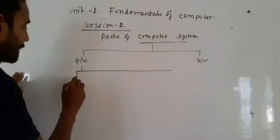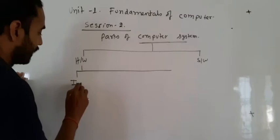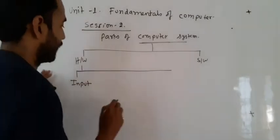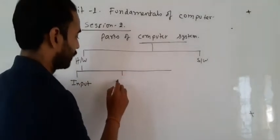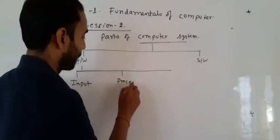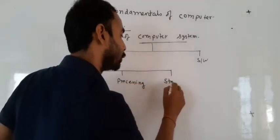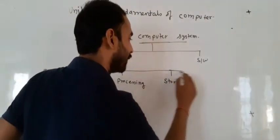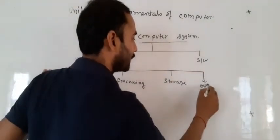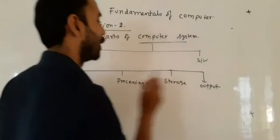In hardware, hardware is further divided into input devices, second is processing, third is storage, and fourth is output device or output unit.